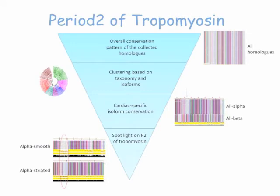We conducted a sequence analysis and studied the evolutionary conservation of tropomyosins. The analysis showed that period five is highly conserved, and that period two and the C-terminal part of period seven, shown here in boxes, are less conserved. When the tropomyosins are clustered phylogenetically at different levels based on taxonomy and tissue-specific isoforms, this decreased conservation of period two is retained throughout.